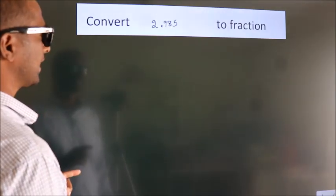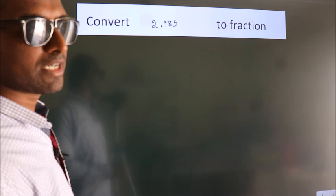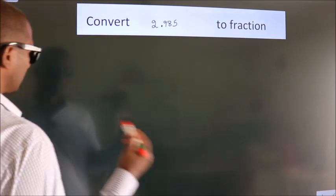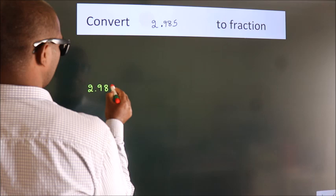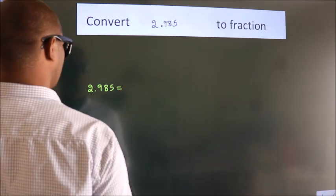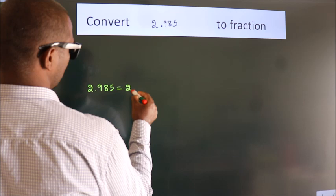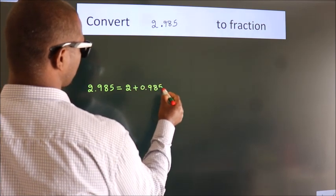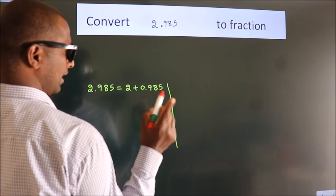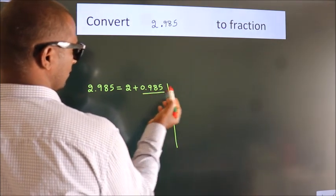Convert 2.985 to fraction. How do we convert? Given is 2.985. First we should break this into 2 plus 0.985. Next, convert this to fraction.